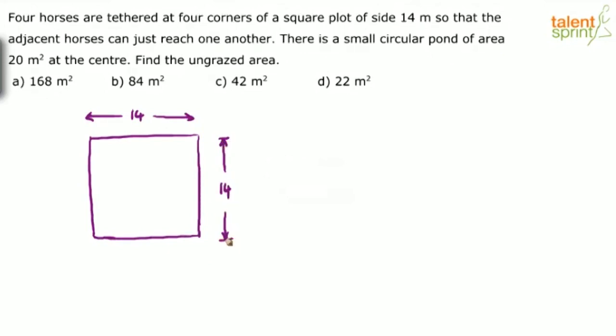Now it says four horses are tethered, meaning tied, at four corners of the square plot. So one horse at each of these corners is tied in such a way that the adjacent horses—like for example let's say this is horse one, horse two, horse three and horse four. So adjacent horses means what? Horse one is adjacent to horse two and horse four. Adjacent horses can just reach one another.